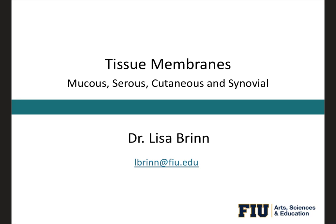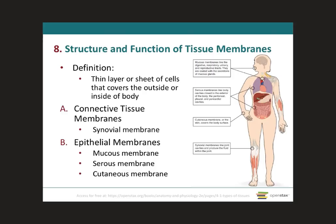Hello everyone. Here we're going to be covering the tissue membranes. A tissue membrane is a thin layer or sheet of cells that covers the outside of the body — for example, the skin — the organs — for example, the pericardium — internal passageways that lead to the exterior of the body — for example, the mucosa of the stomach — and the lining of movable joint cavities.